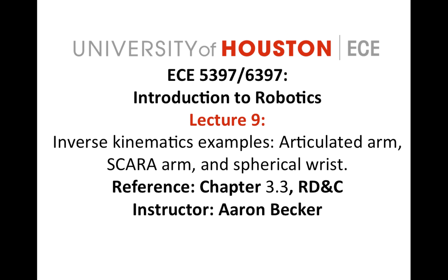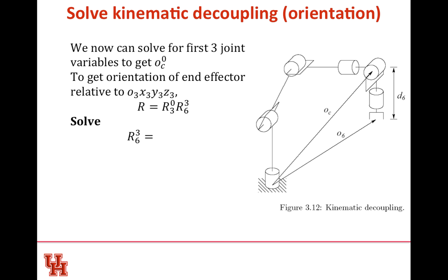Good evening, class. We're going to finish talking about inverse kinematics today. As a reminder, we're doing inverse kinematics on systems that have six degrees of freedom, where they have a spherical wrist, and the first three degrees of freedom are for positioning of the robot. This reference for today is out of Chapter 3.3.